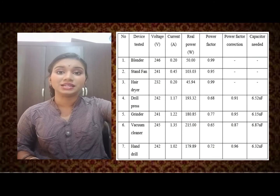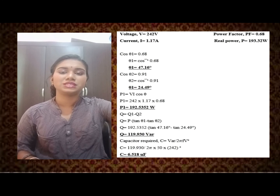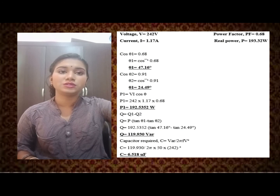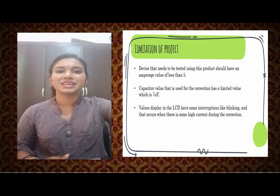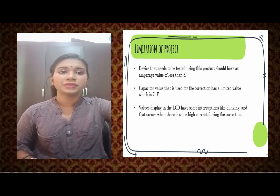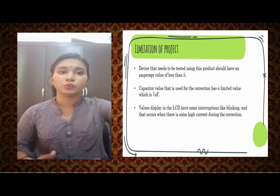I also performed manual calculations to verify and cross-check with the automatic correction results, including showing the required capacitor values for power factor correction. The project's limitation is that the device under test must draw less than 5 amperes, as exceeding this may blow the fuse; higher-rated fuses would be needed for high-power equipment. The combined capacitor value is limited to 7 microfarads, and the LCD display may blink due to high current flow during corrections.